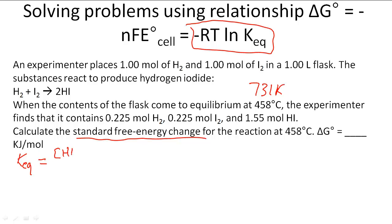We know that's going to be the concentration of HI squared over the concentration of H2 times the concentration of I2. That's 1.55 squared divided by 0.225 times 0.225, which gives me 47.5 as the Keq for this reaction.